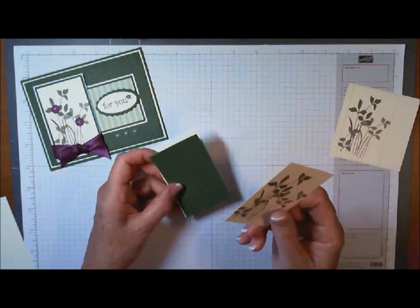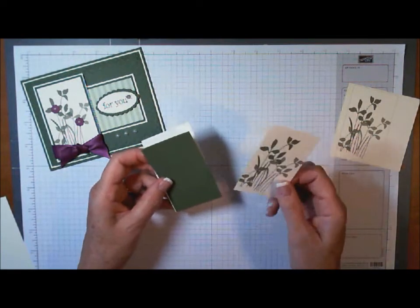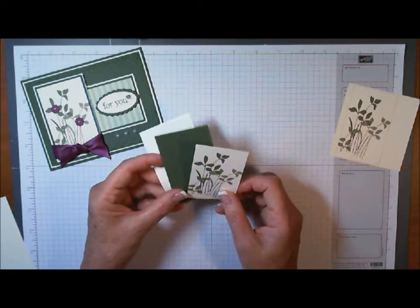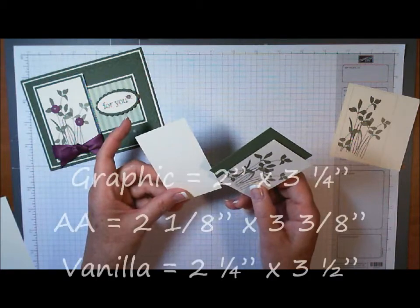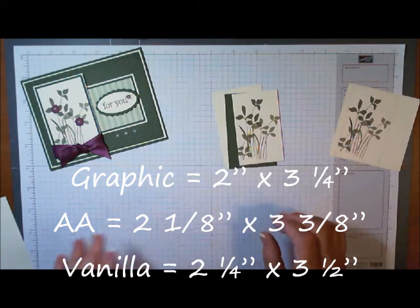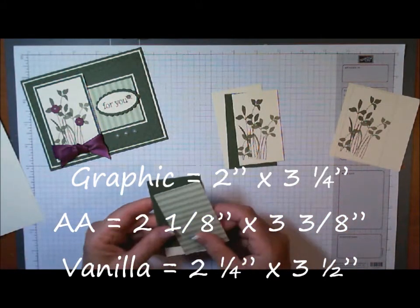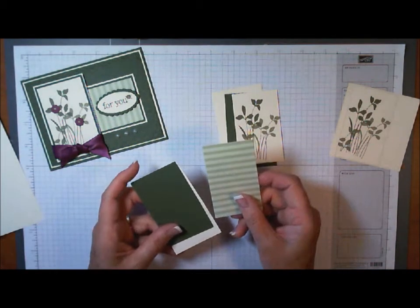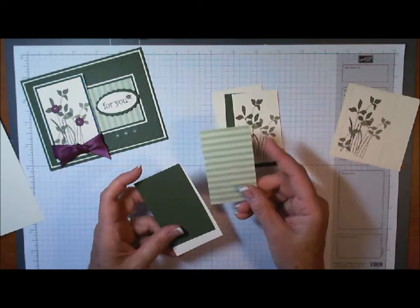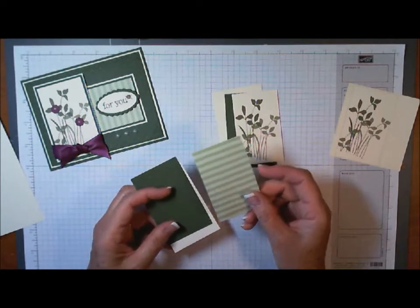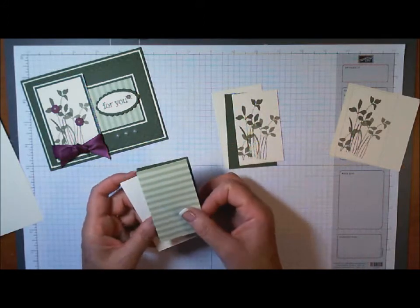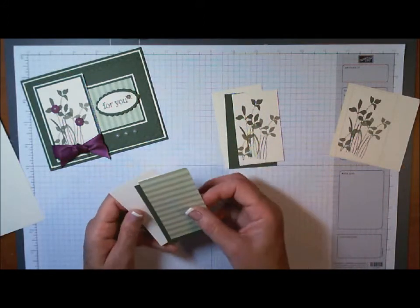I have my graphic cut out at two by three and a quarter. I have a piece of Always Artichoke cut at two and an eighth by three and three eighths, and a piece of Very Vanilla cut at two and a quarter by three and a half. We're just going to layer those three pieces together. I also have a piece of Designer Series paper from Vintage Springtime Designer paper with stripes. These measurements are cut the exact same as what we just cut for our graphic.